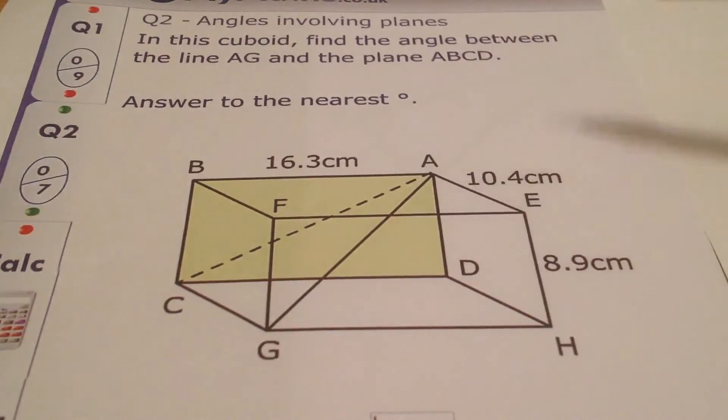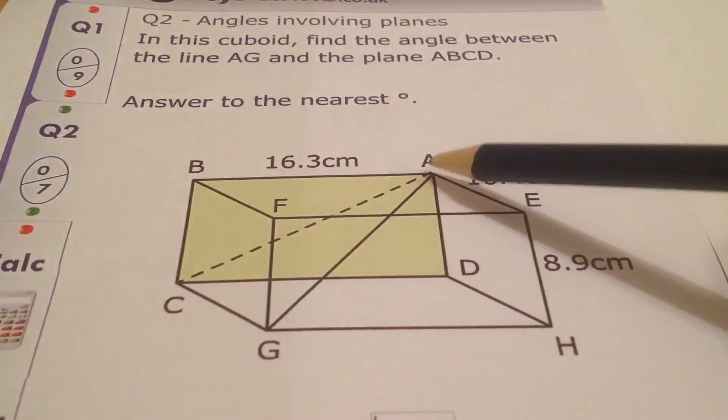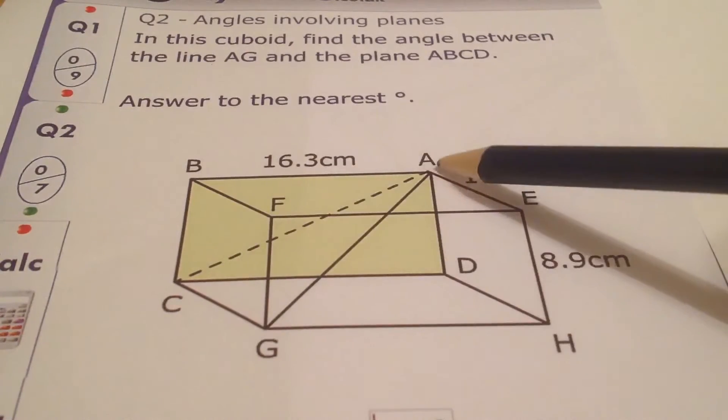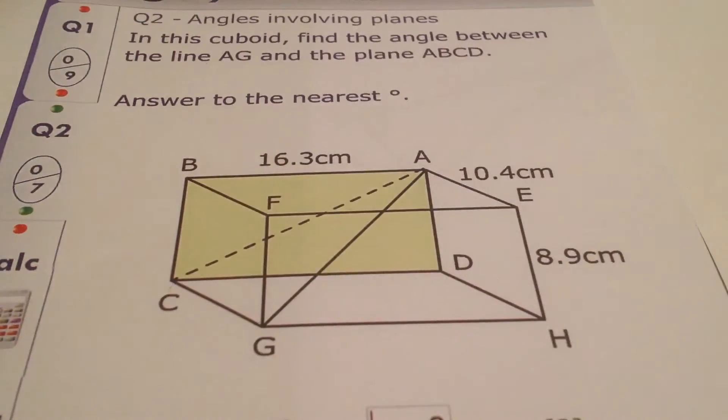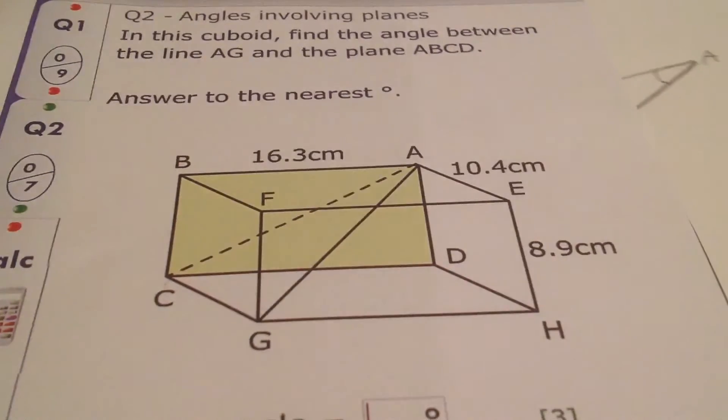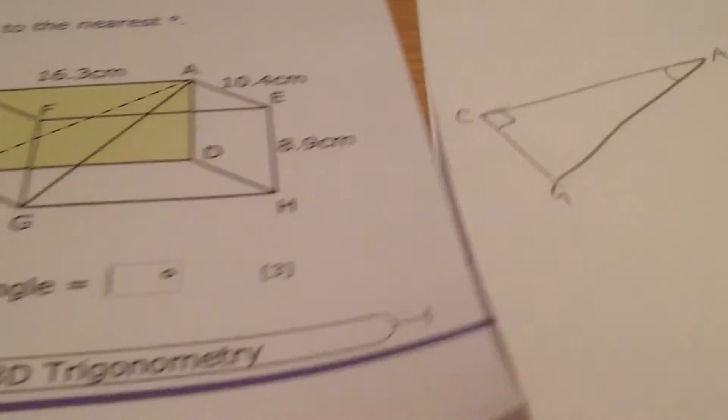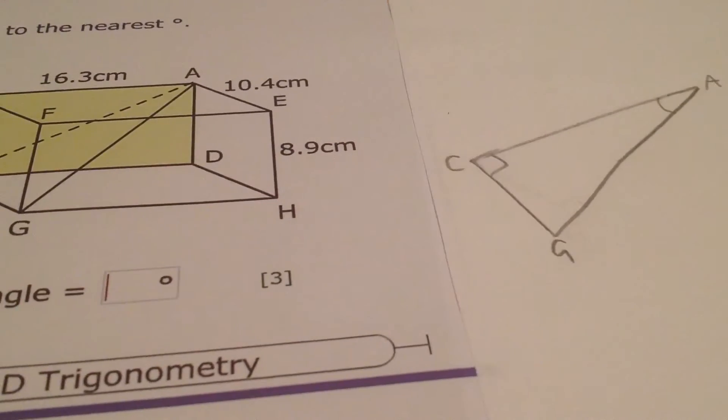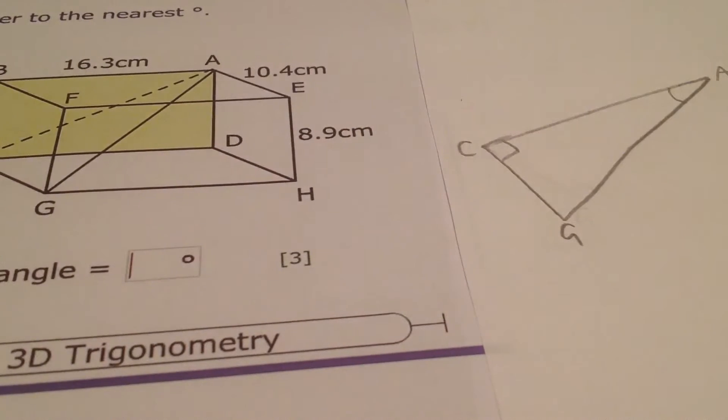They've been very nice and they've actually drawn in the third line that we're interested in, which is AC. So, I'm going to sketch that triangle and isolate it from the rest of the shape and draw on what I know.